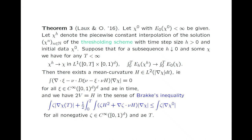In general there might be non-uniqueness and singularities, so this is just a convenient weak notion of solution — a notion of solution built on the dissipation inequality. The global dissipation inequality is just a single inequality, so it could never be enough to characterize an infinite-dimensional evolution equation, but it turns out this localized version does.